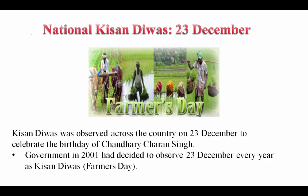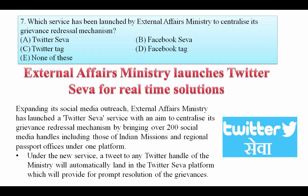National Kisan Divas is observed on 23rd December to celebrate the birthday of Chaudhary Charan Singh, former Prime Minister of India. The government in 2001 decided to observe 23rd December every year as Kisan Divas, that is Farmer's Day. Which service has been launched by the External Affairs Ministry to centralize grievances redressal? The External Affairs Ministry launched a Twitter Seva service aiming to centralize grievances redressal by bringing 200 social media handles including Indian missions and regional passport offices under one platform.